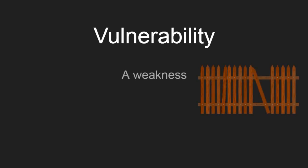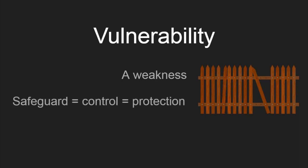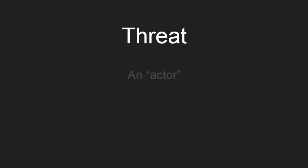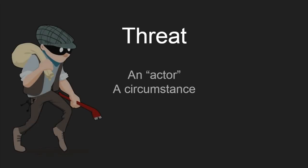A vulnerability is a weakness, such as a broken fence. Sean Harris also called a vulnerability a lack of a safeguard. The word safeguard and control are the same thing — they simply mean some type of protective mechanism. A threat is something that can take advantage of the vulnerability, such as a thief in the case of a broken fence. It can also be a circumstance, such as the weather.